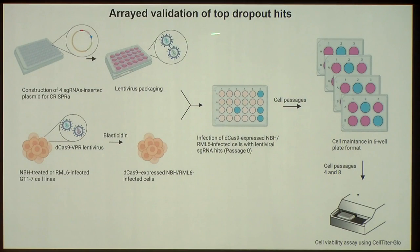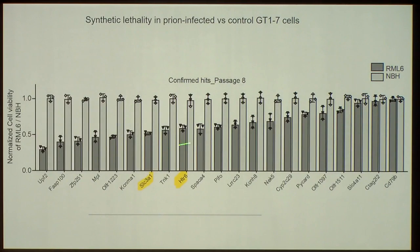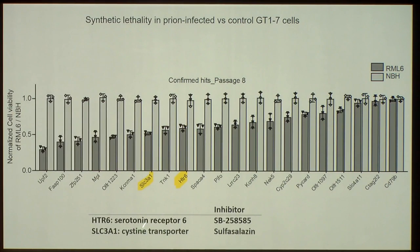The dropout hits — genes that disappear when overexpressed in the presence of prion infection — show that most of these genes are expressed in the brain, and of those, most are expressed in neurons. We validated the top hits using plasmids containing four guide RNAs and looked at dropouts again. These are very recent data. Two of the top hits are quite interesting: one is a system transporter and the other is a serotonin receptor. We focused on these because chemical inhibitors exist for both.